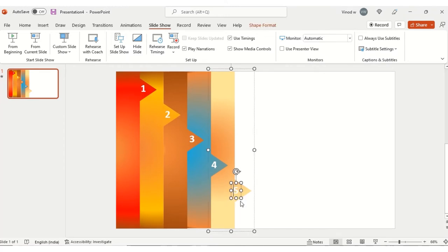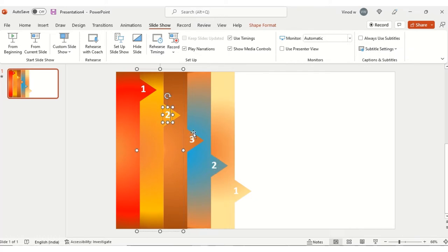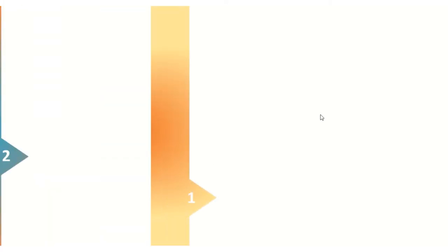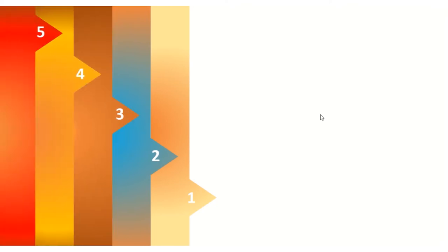You can rearrange the numbers if needed. Since five was coming first, that doesn't make sense. I'll rearrange so it goes one, two, three, four, five. Now this is the correct order — three, two, four, five. This is perfect so you can see the data appearing in the right sequence.